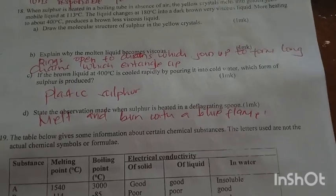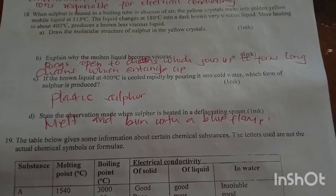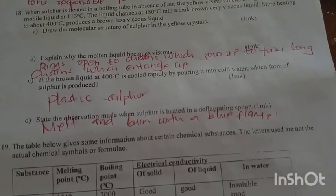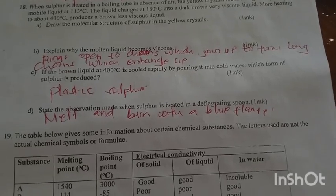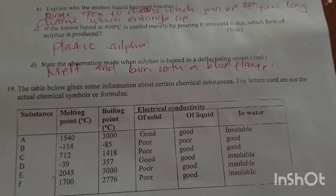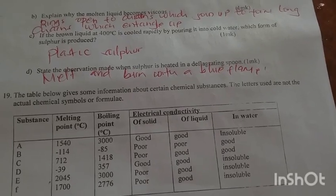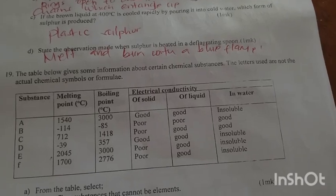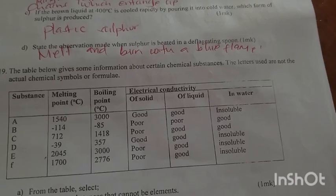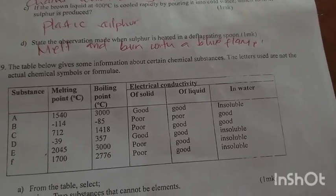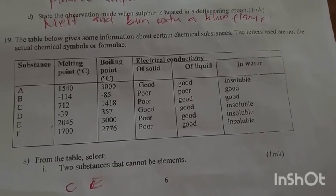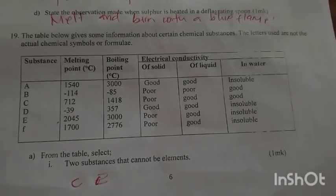When sulfur is heated in a boiling tube in absence of air, yellow crystals melt into a golden yellow mobile liquid at 113 degrees Celsius. The liquid changes at 180 degrees into a dark brown viscous liquid. More heating above 400 degrees produces brown less viscous liquid. Explain why molten liquid becomes viscous. The rings open to chains which join up to form long chains which entangle. If the brown liquid at 400 is cooled rapidly by pouring into cold water, which form of sulfur is produced? Plastic sulfur.